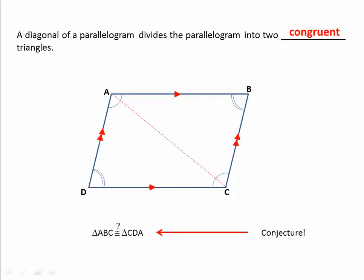When we say that triangle ABC is congruent to triangle CDA, this is a conjecture. When we have a conjecture, that's called inductive reasoning, and when we have that kind of conjecture we have to prove it. So here we go with another proof.